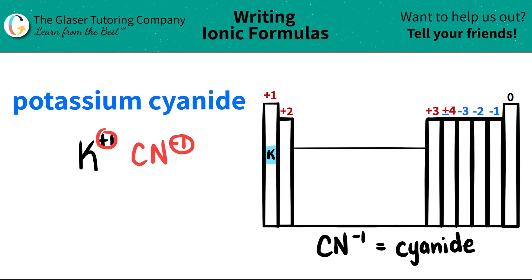Now, since we have the charges, all we got to do is crisscross them, okay? And that tells us how many of each we need. So this plus one crisscrosses, telling me that I need one CN, and this negative one crisscrosses down to the potassium, telling me that I need one potassium. Now, when you crisscross, remember the charges kind of vanish — it's just the positive whole numbers: one, two, three, four, et cetera.